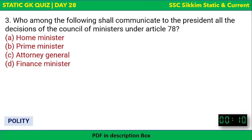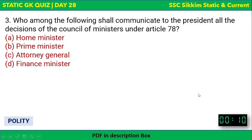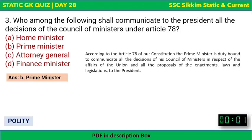Next question: who among the following shall communicate to the President all the decisions of the Council of Ministers under Article 78? The options are Home Minister, Prime Minister, Attorney General, or Finance Minister. The correct answer is Prime Minister.